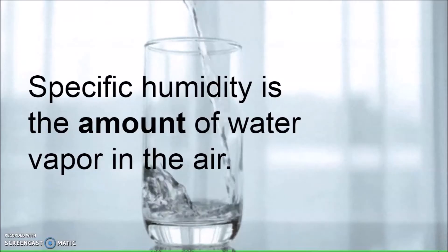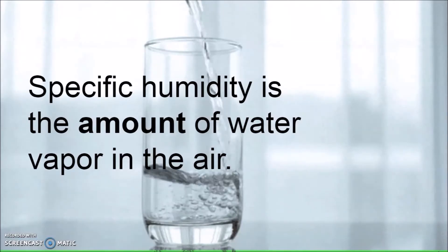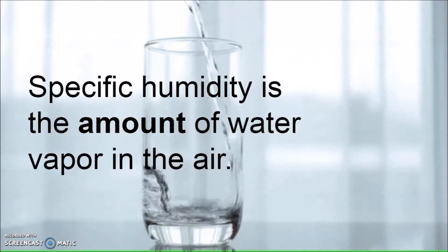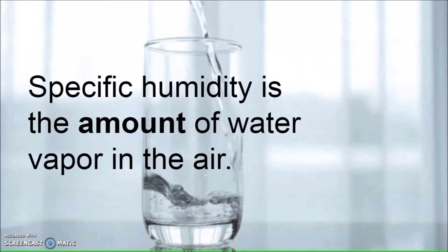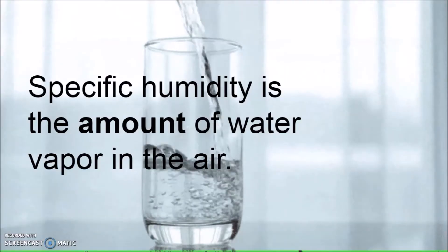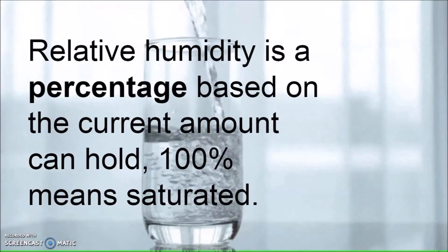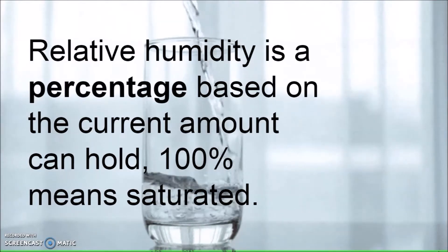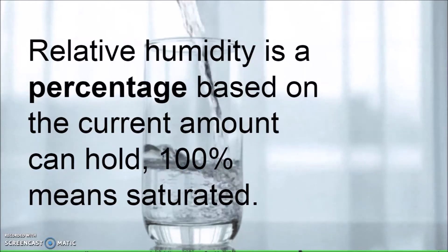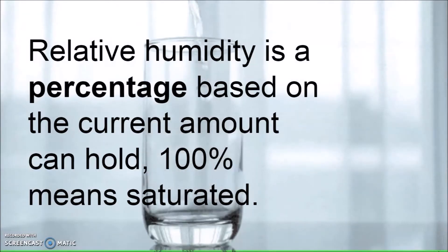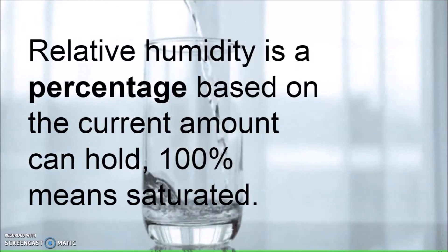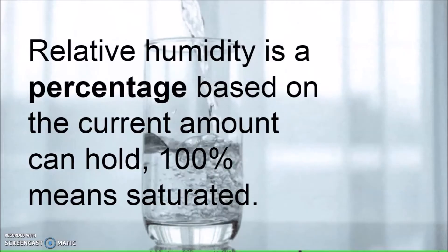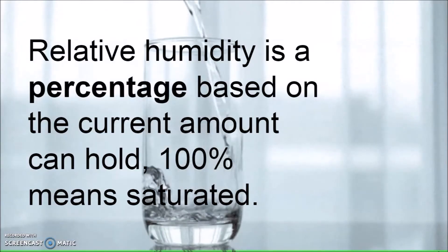Specific humidity is the amount of water vapor in the air — for example, I will tell you that there are four ounces of water in this cup; the same would be true for the air. When we refer to humidity, we're usually talking about relative humidity, which is a percentage based on the current amount the air can hold. For example, if relative humidity is 100%, that means the air is saturated, or completely filled with water — and chances are, you're going to get rain soon.